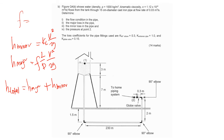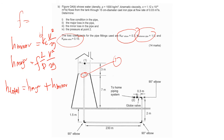You just need to substitute the values. The value of KL comes from the coefficients given: the entrance, and the globe valve. We have only one entrance and one globe valve, plus three 90-degree elbows — one, two, three. So we have three K values for 90-degree elbows and one for the globe valve. Just substitute the values and you can find the answer. That's all for today. Thank you very much for your attention. Assalamualaikum warahmatullahi wabarakatuh.